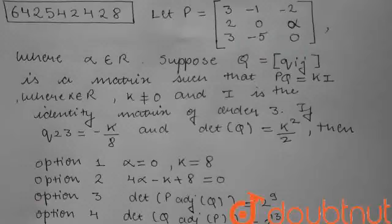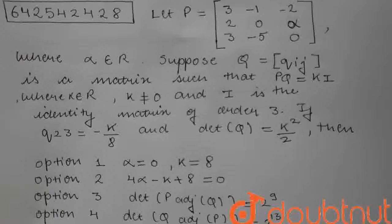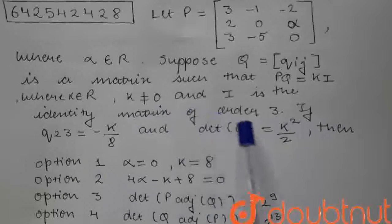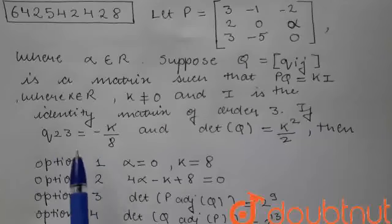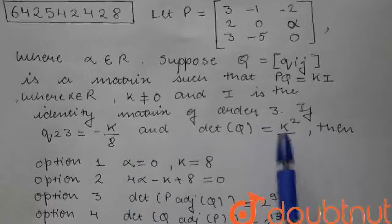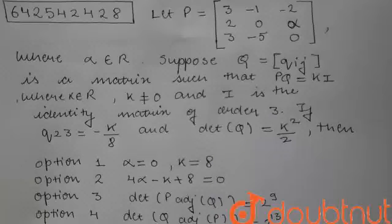Hello students, today's question is: let P = [3, -1, -2; 2, 0, alpha; 3, -5, 0], where alpha belongs to R. Suppose Q is a matrix Q_ij such that PQ = KI, where K belongs to R and K is not equal to 0, and I is the identity matrix of order 3. If Q₂₃ = -K/8 and determinant of Q = K²/2, then we are given four options. So let us start the question.